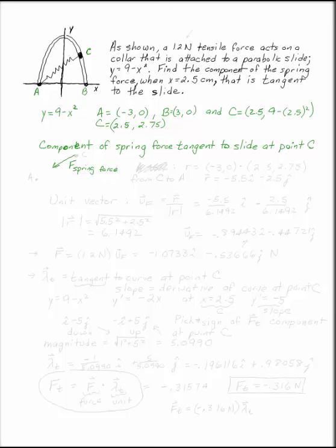Let's find the position vector along the line from C to A — it's 'to minus from.' Point A is (-3, 0) and point C is (2.5, 2.75), so the position vector R from C to A is -5.5i minus 2.75j. We're going from point C toward point A.